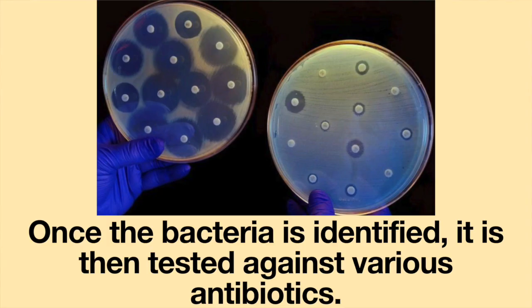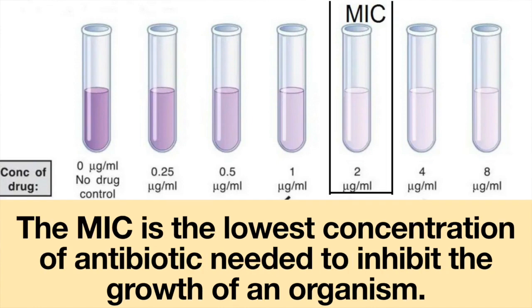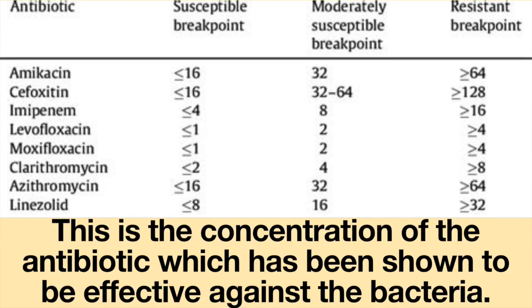Once the bacteria is identified, it is then tested against various antibiotics. For each antibiotic tested, a minimum inhibitory concentration, or MIC, is reported. The MIC is the lowest concentration of antibiotic needed to inhibit the growth of an organism. For each antibiotic, there is a breakpoint — this is the concentration of the antibiotic which has been shown to be effective against the bacteria.